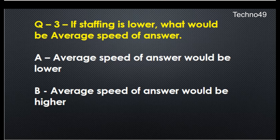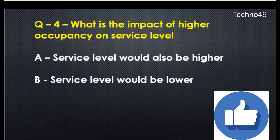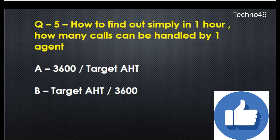A: average speed of answer would be lower, or B: average speed of answer would be higher. The fourth question: what would be the impact of higher occupancy on service level? A: service level would also be higher, or B: service level would be lower.